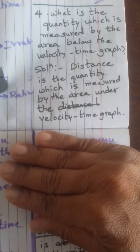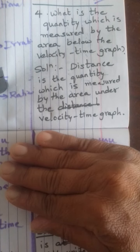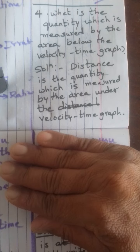Now the fourth question: What is the quantity which is measured by the area below the velocity-time graph? The answer is: distance is the quantity which is measured by the area under the velocity-time graph. So the area under the velocity-time graph gives the distance covered.